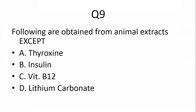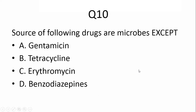Next question: the following are obtained from animal extracts — remember to watch for 'except'. Options are thyroxine, insulin, vitamin B12, and lithium carbonate. The correct answer is lithium carbonate — it is a mineral and is not obtained from an animal source.